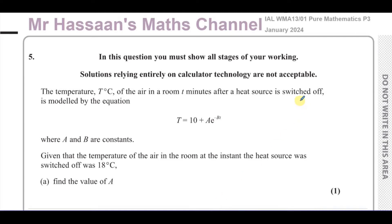Welcome back, this is Mr Hassan's Maths channel. I'm now answering question number five from the January 2024 Pure Mathematics P3 exam. We have a question involving modelling using exponentials. The temperature T degrees Celsius of the air in a room, t minutes after a heat source is switched off, is modelled by the equation T = 10 + Ae^(-bt). As time goes on, the temperature decreases. Capital T is the temperature, small t is the time in minutes.